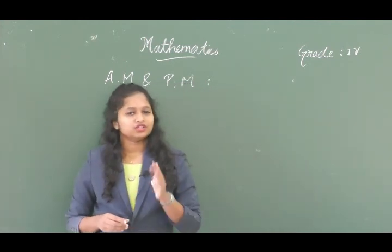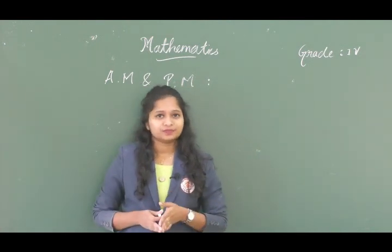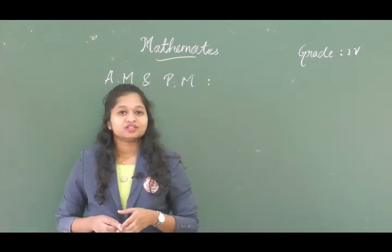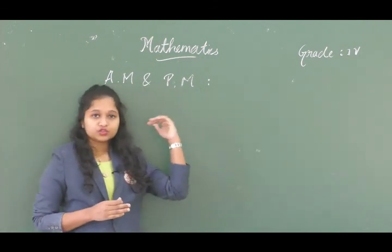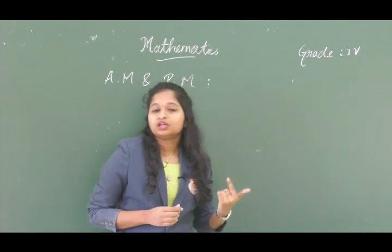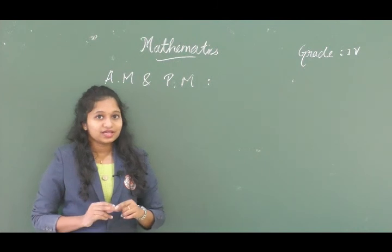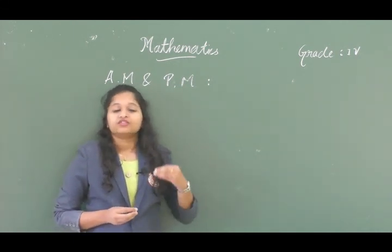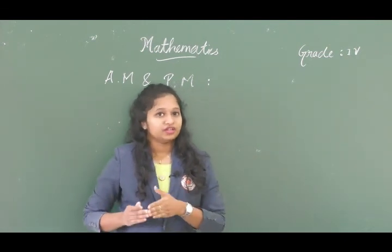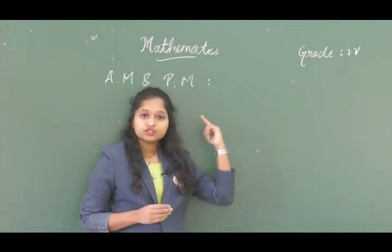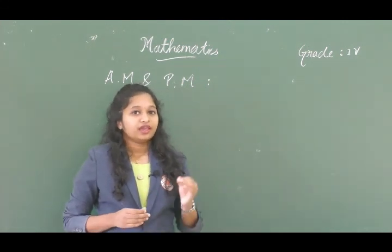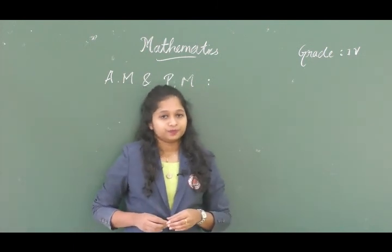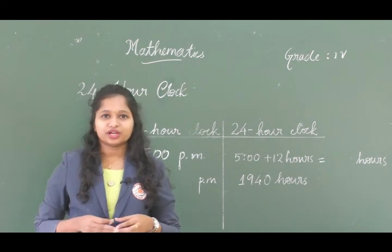A day consists of 24 hours, but our clock has only 12 numbers, representing 12 hours. This means a clock displays the same time twice a day. The time from 12 noon to 12 midnight is PM — post meridian. And from 12 midnight to 12 noon is AM — anti meridian.